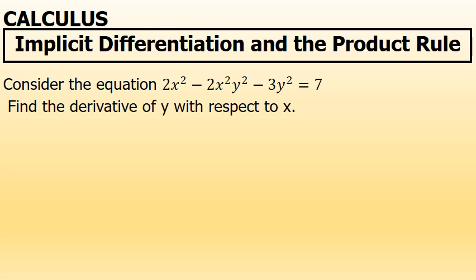To find the derivative of the equation 2x squared minus 2x squared y squared minus 3y squared equals 7, with respect to x, I'm going to have to use implicit differentiation. Additionally, the second term in this problem, negative 2x squared times y squared, is a product, and will require the product rule to differentiate.